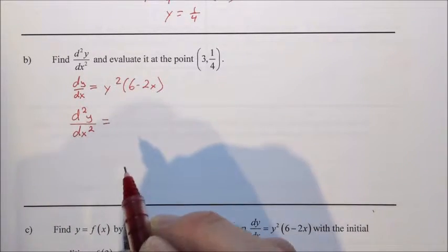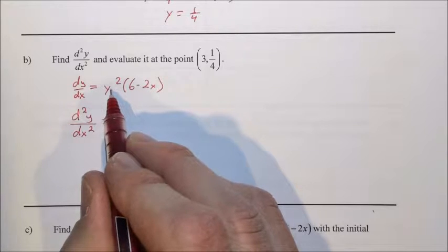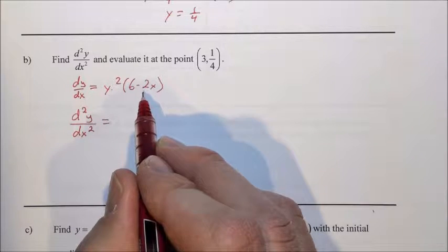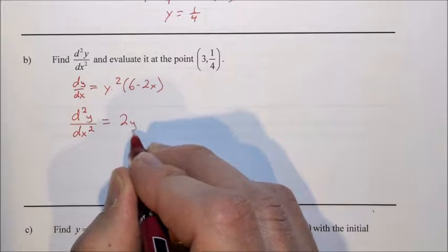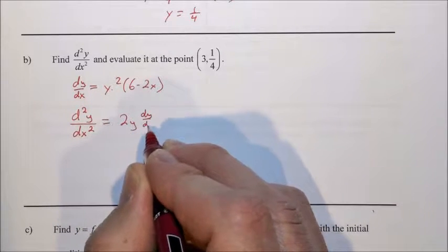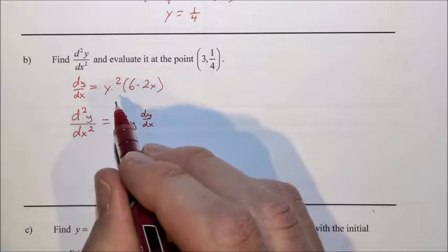We're asked to find the second derivative. So we derive the left side, and that becomes d²y/dx². We have to derive the right side now. We have to do implicit differentiation. We have a product, y squared times 6 minus 2x.